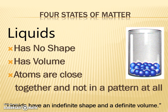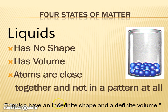Liquids are our second state of matter, our phase of matter. Liquids don't have any shape — they take the shape of the container. So it'll spill out and go really flat if there isn't a container. But it does have a volume; we measure the volume with a graduated cylinder. The atoms are still very close together, but not in a nice crystalline pattern — sometimes they're in little strings but still really close together. Liquids have an indefinite shape, meaning no shape, and a definite volume.